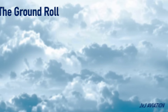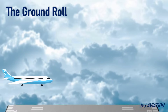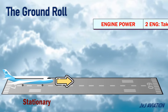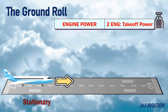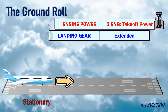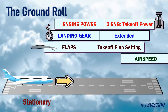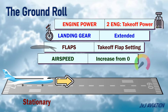The ground roll. Before takeoff, the aircraft is initially stationary and aligned with the runway's centerline. Both engines are currently operative and set to takeoff power. The landing gear is in the extended position. The flaps are in the takeoff flap setting. The airspeed will start to increase from zero.